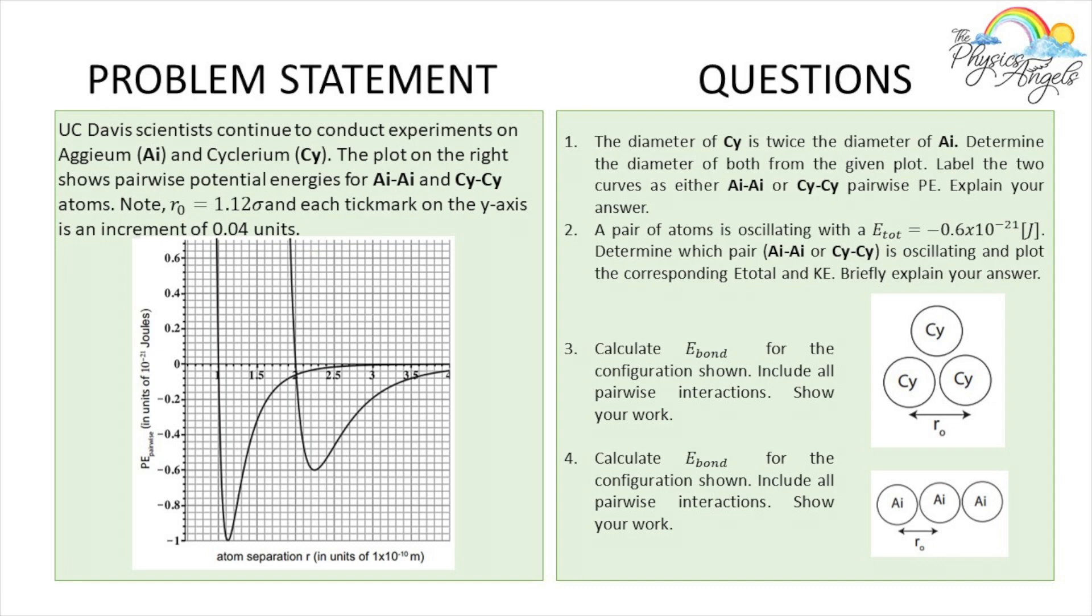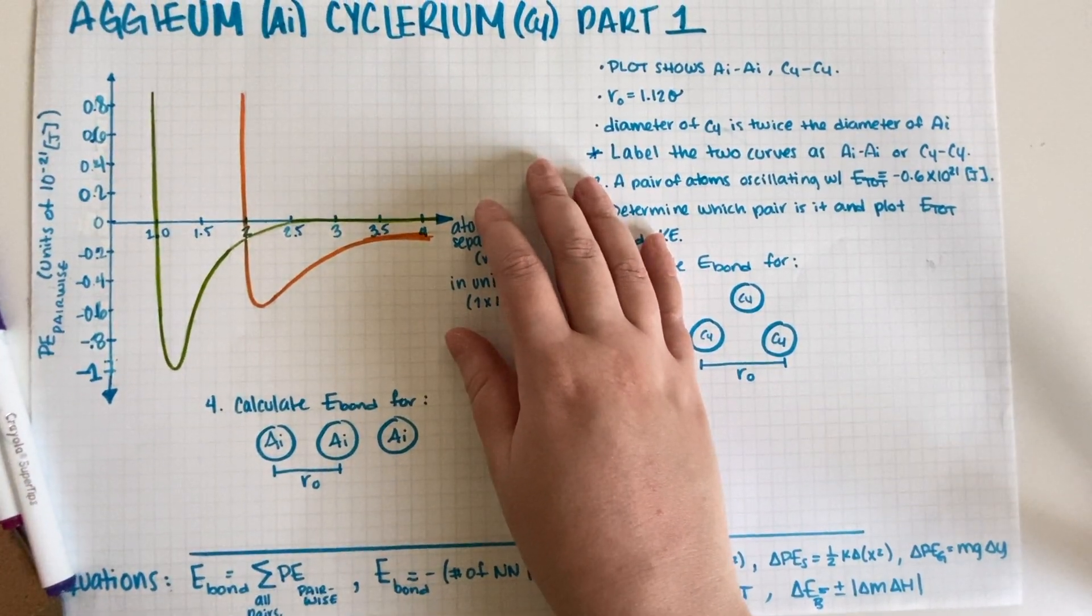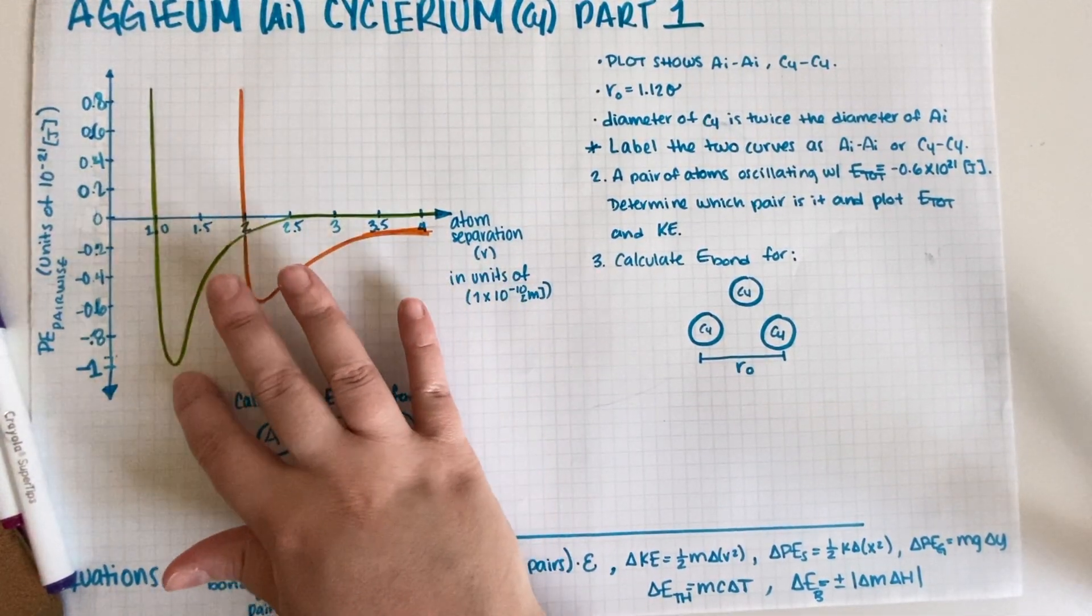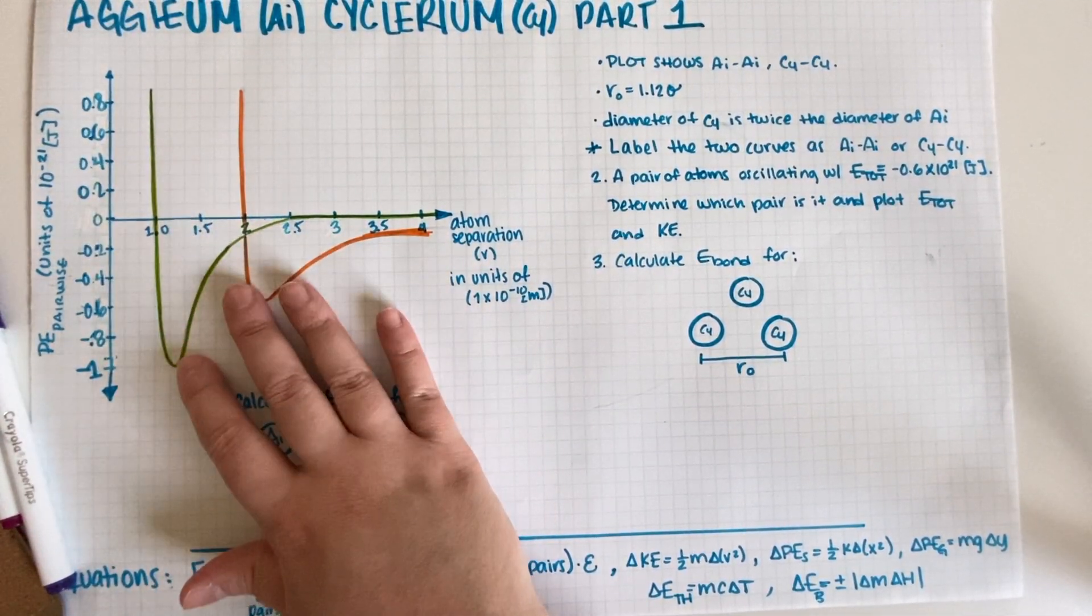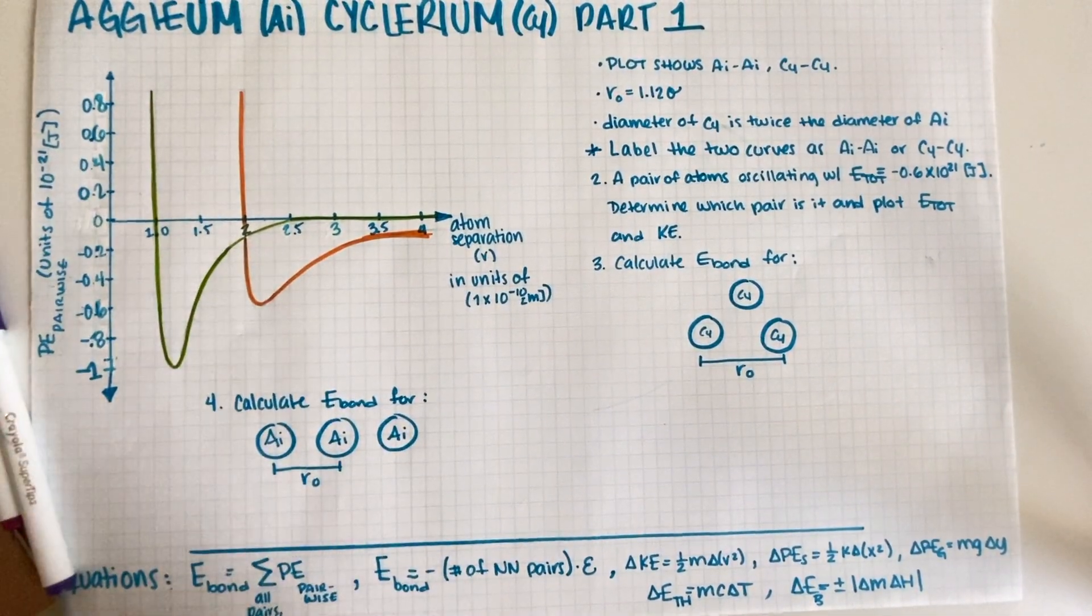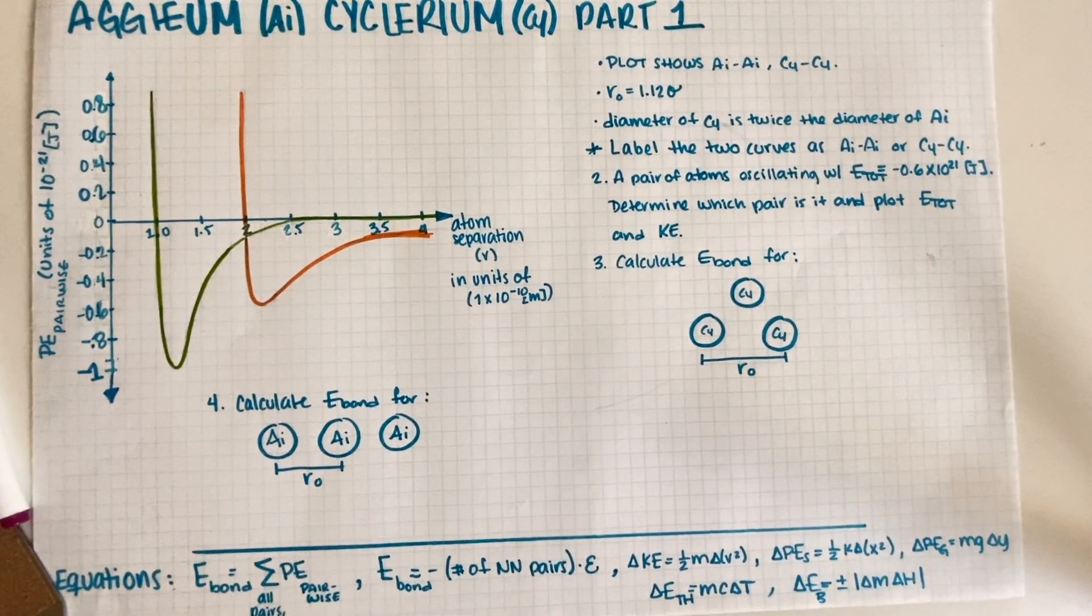Okay, so let's just go ahead and do the first two questions. As you can see, I have my problem over here. I have both of the graphs - one of them is the Aegeum-Aegeum and then one of them is Cyclerium-Cyclerium. So let's just go ahead and figure out who is who.